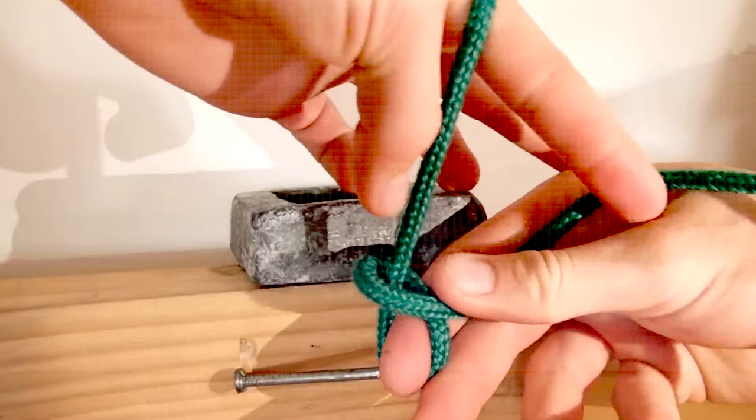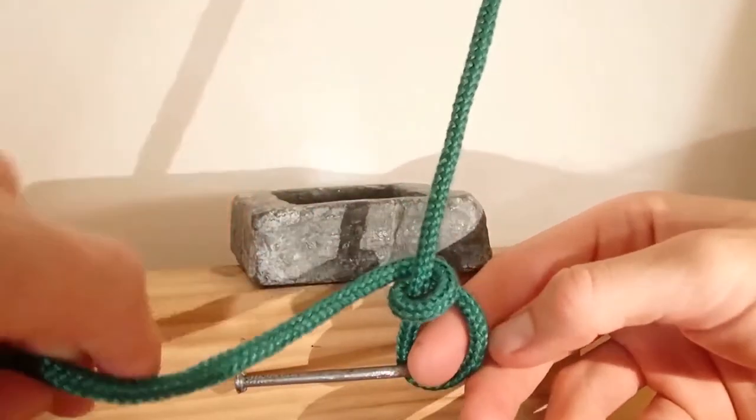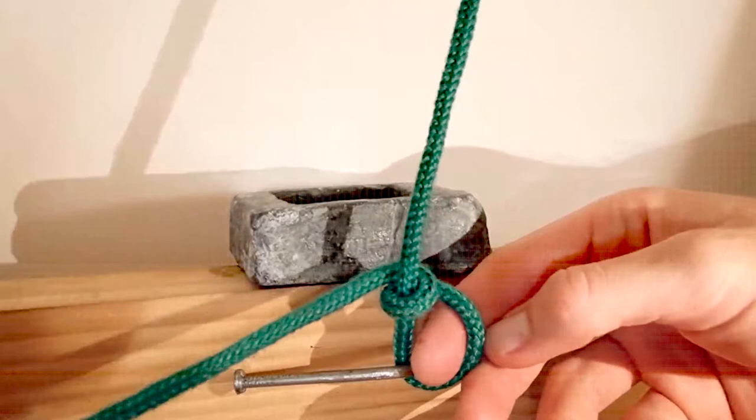Repeat the previous step by passing the standing end behind the working end a second time, but instead of forming a turn, pull the standing end away from the fixed loop.